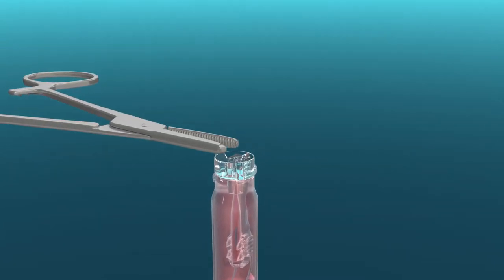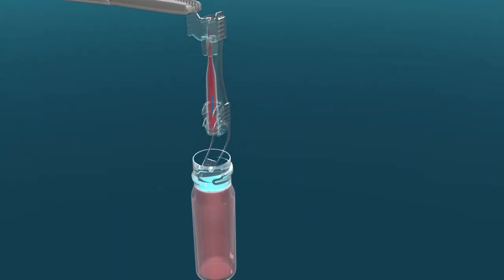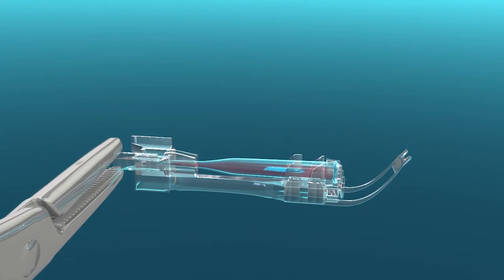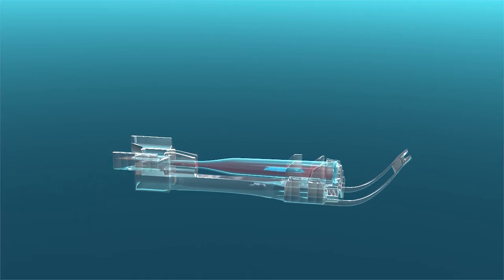Using sterile hemostats, remove the preloaded cannula system from the flask. Place the preloaded cannula system on the sterile field with the cannula facing up.